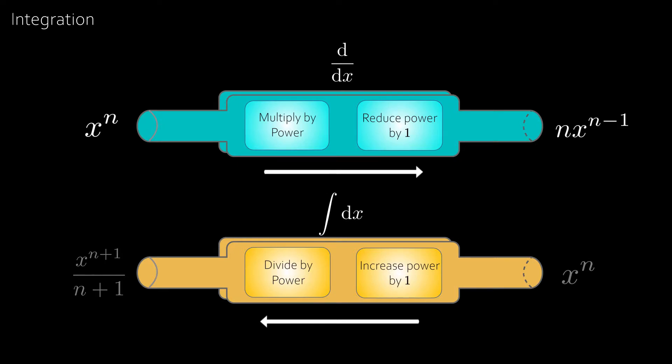For example take x cubed. Then to find the anti-derivative we increase the power by 1 and then divide by the power giving x to the power of 4 over 4. And to double check if we differentiate x to the power of 4 over 4 then we get back to x cubed.